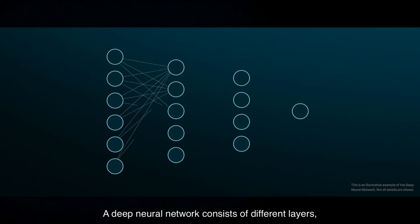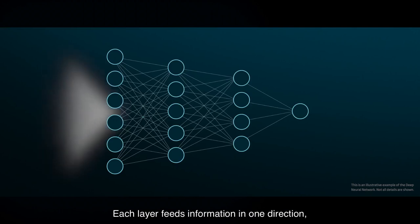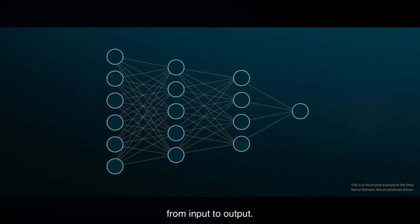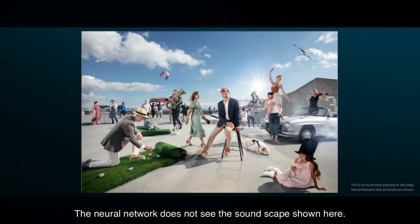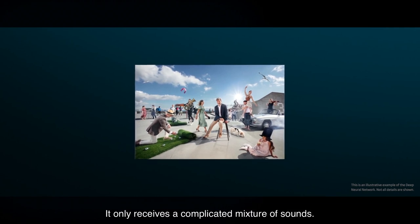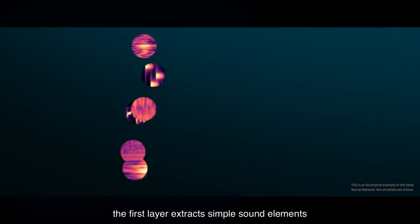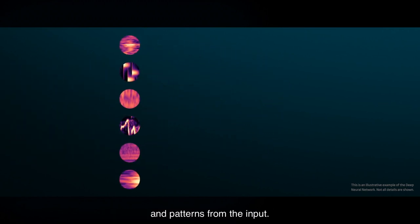A deep neural network consists of different layers with thousands of connections. Each layer feeds information in one direction from input to output. The neural network does not see the soundscape shown here — it only receives a complicated mixture of sounds.